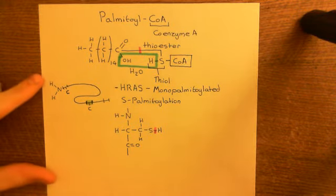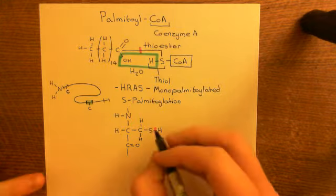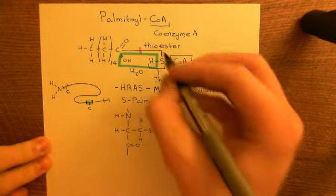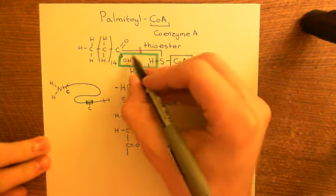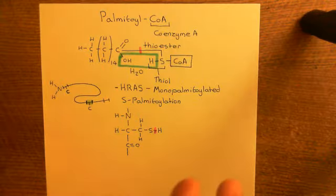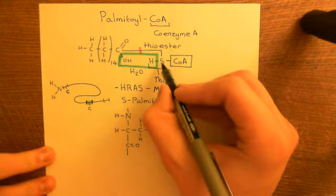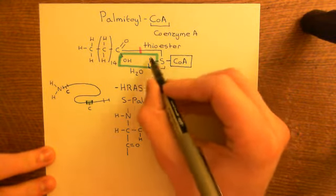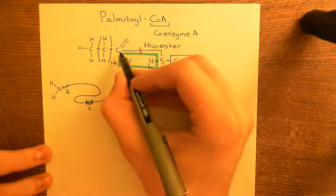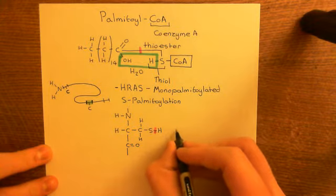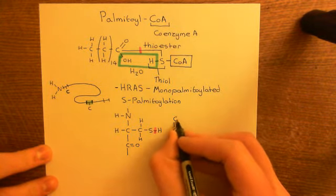Both bonds are single covalent bonds, each containing two electrons. Returning electrons to their original atoms: one electron goes back to each sulfur and one to each departing atom. The hydrogen from the cysteine thiol and the free electron from CoA's sulfur rejoin to regenerate the coenzyme A molecule. The carbon from the palmitoyl group, with its free electron, binds to the cysteine sulfur with its free electron — palmitoylating the cysteine residue.